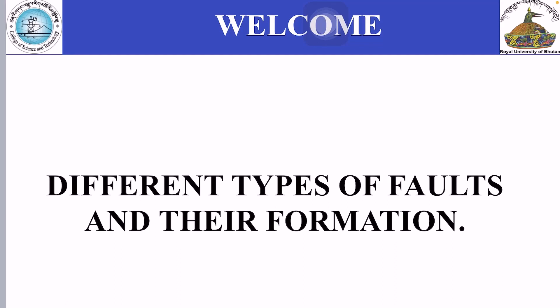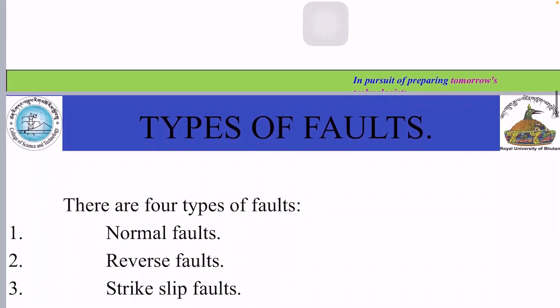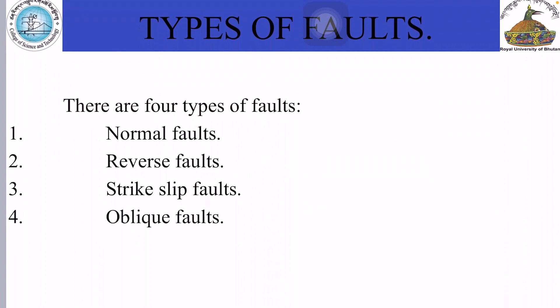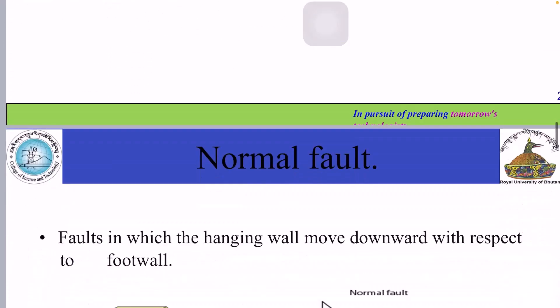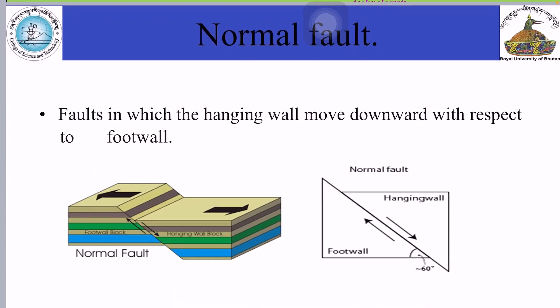Before I show you the map containing the thrusts and faults in Bhutan, I will be explaining briefly about different types of faults and their formation. As you can see, there are four types of faults: normal fault, reverse fault, strike-slip fault, and oblique fault. Understanding these types of fault and their associated structures is very important for predicting and mitigating hazards like earthquakes, landslides, and other geological hazards.